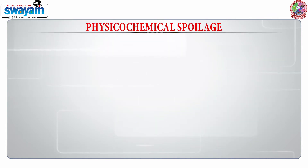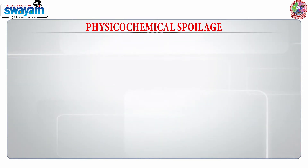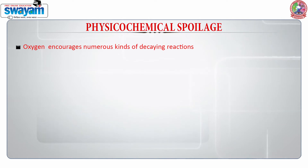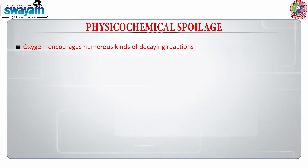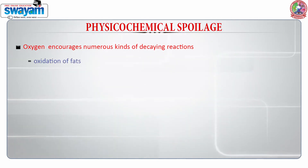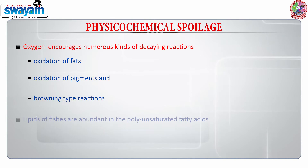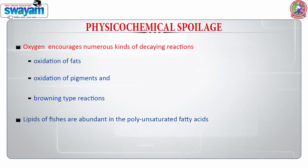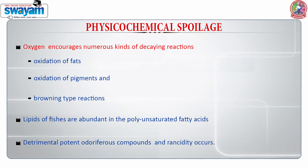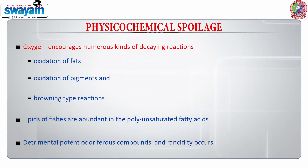The second type of spoilage which takes place in fishes is due to physicochemical changes. Oxygen plays a very important role because it encourages numerous decaying reactions, the majority of which are oxidation of fats, oxidation of pigments and browning-type reactions. The lipids of fishes are abundant in polyunsaturated fatty acids, and these polyunsaturated fatty acids undergo spoilage, bringing about the production of ferrous compounds and rancidity.